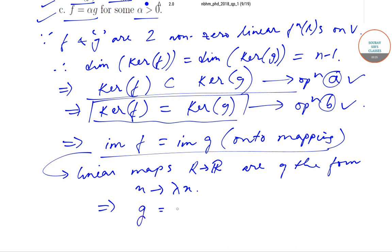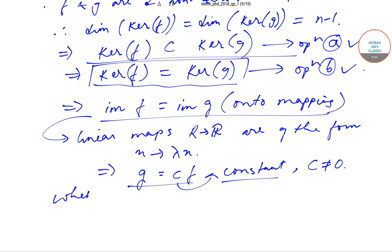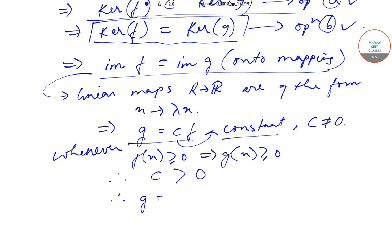Therefore we must have G equal to some constant C times F, where C is a non-zero constant. Also, whenever F(x) ≥ 0 that implies G(x) ≥ 0, so our constant C, which is not equal to 0, must be greater than 0.